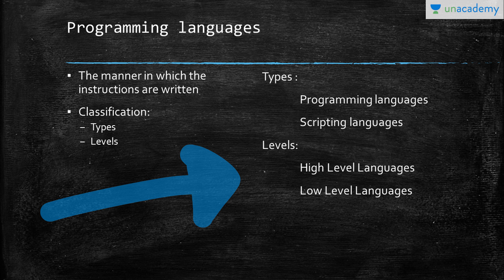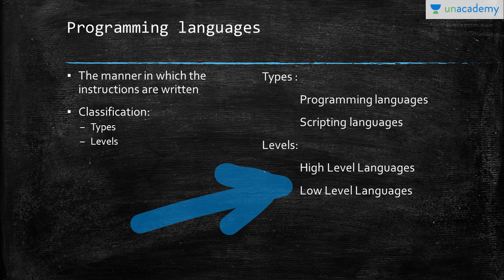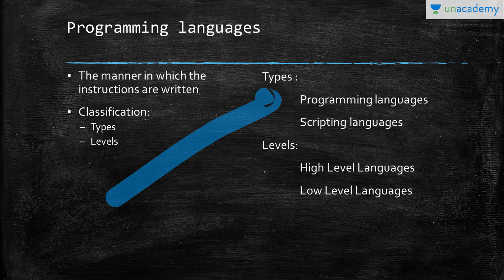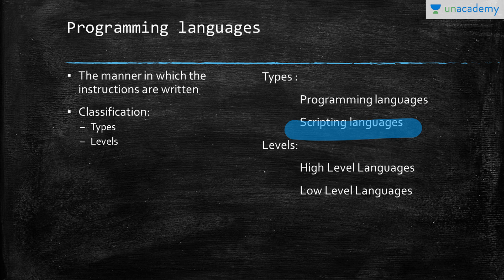For example, in the beginning we had mainframe computers and they were too big. In those times we were not using the languages that we use today like Java and Python—they were not available at that time. Let's classify them on the basis of types.